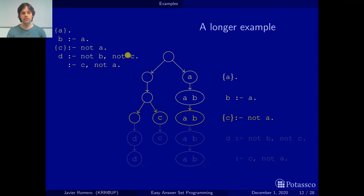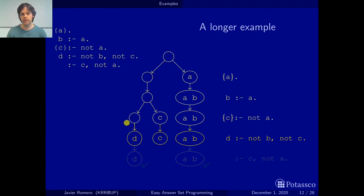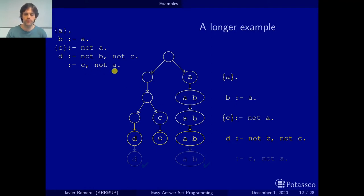Similarly, the rule for D depends on B and C, and those have been applied. So we apply the rule for D: if B is not in the set and C is not in the set, then we add D. Here this set has C, and here it has B, so the rule doesn't change anything on those sets. But here we have neither B nor C, so we add D. Then we apply the last constraint, which tells us to delete the sets that contain C and do not contain A.